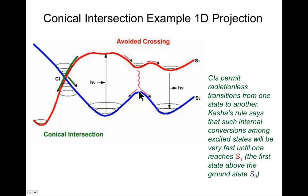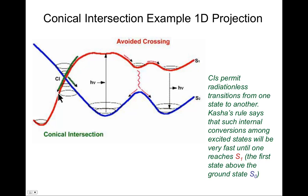Since you've lost energy in the electronic state, it must have found its way into vibrations or rotations, and that can happen when the states are very close to one another. Over on the left-hand side there is a true conical intersection — a seam in other degrees of freedom. You can propagate either along the red path or the blue path, depending on how you come through that intersection.